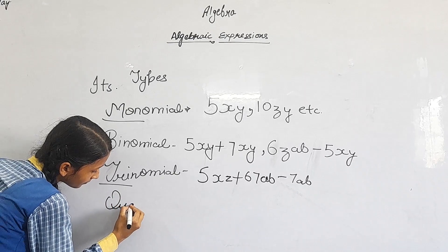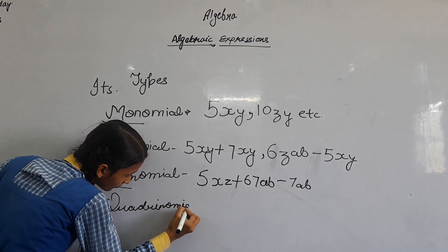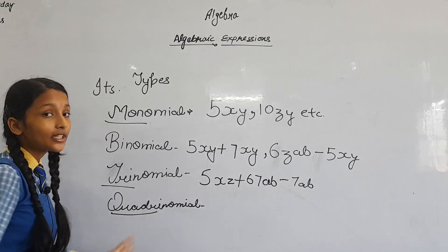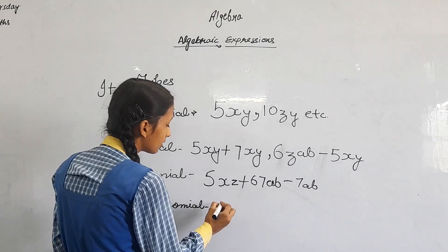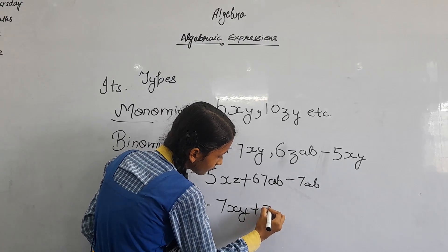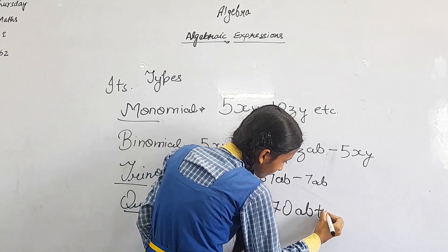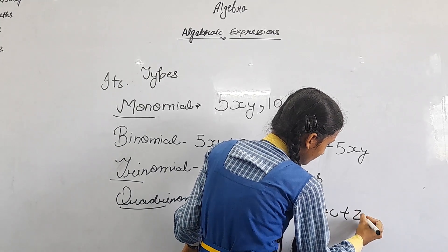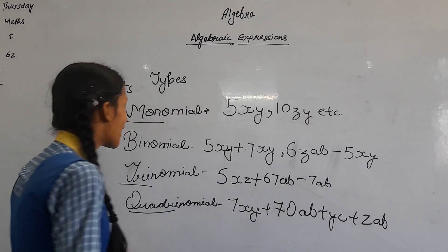And next is quadrinomial. Quadri means four, so the algebraic expression which contains only four terms is known as quadrinomial. Here we see there are four terms, so it is quadrinomial.